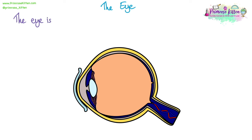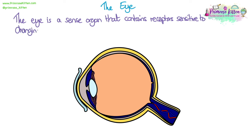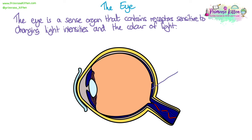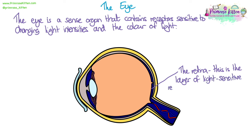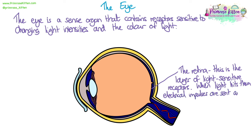The eye is a sense organ that contains receptors sensitive to changing light intensities and the colour of light. The retina is the layer of light-sensitive receptors at the back of the eye. When light hits these receptors, it absorbs the light and turns it into an electrical impulse, which is then sent along neurons to the brain, which receives the information and turns it into an image.